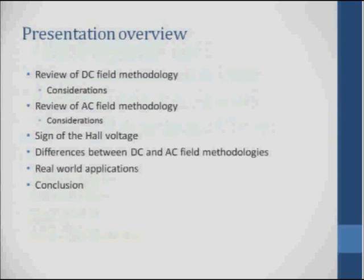We're going to start with the review of the DC field Hall measurements, which is a standard Hall measurement that has been done for years. We're going to propose an AC field method to improve the measurement, and one of the big challenges is what is the sign of the Hall voltage, which is the sign of the carrier. It's not unusual to do a Hall measurement on a low-mobility material and get P-type one measurement, and do it again, get N-type. We'll spend a little time talking about that. We'll do some comparisons, and then I'll show some measurements on some real materials.